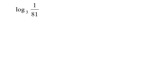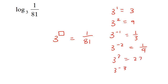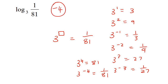This one's a little more interesting because it's 1 over 81. So we could say: 3 to the power of what gives you 1 over 81? From the previous example, notice that 3 to the power of 1 is 3, 3 to the minus 1 is 1 over 3; 3 to the 2 is 9, 3 to the minus 2 is 1 over 9; 3 to the 4 gives 81, so 3 to the minus 4 gives 1 over 81. So this answer is negative 4.